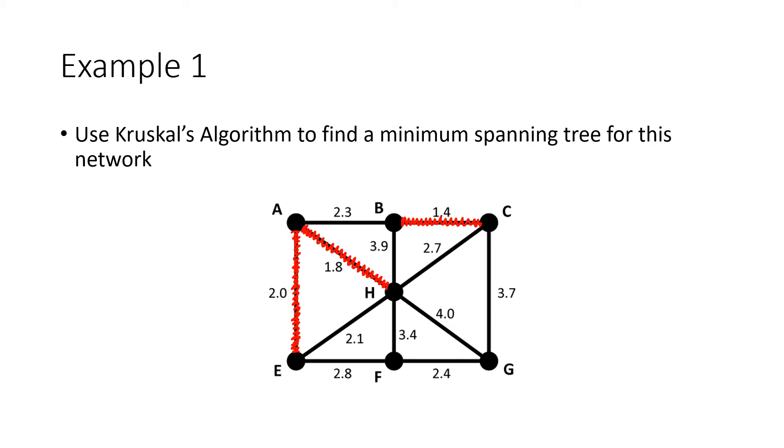Still don't have everything connected yet. The next lowest number is 2.1 connecting H to E. If I use that edge, I'd have a circuit connecting A, H, and E. We don't want any circuits, so that one gets crossed out. Next up is 2.3 connecting A to B, so this edge gets added without creating circuits.